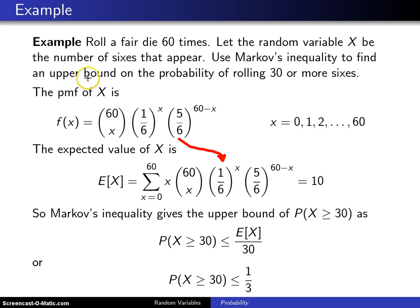Now we want an upper bound on the probability of rolling 30 or more sixes. If you use the notation on the previous page, a is going to be 30 in Markov's inequality.